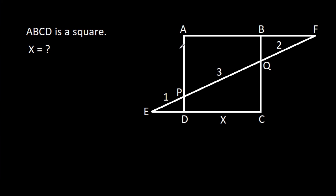In this video, we have been given that ABCD is a square and EP is 1, PQ is 3, FQ is 2, and CD is X. Then we have to find X.